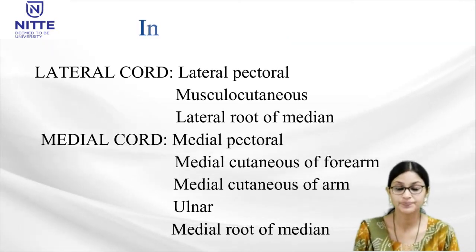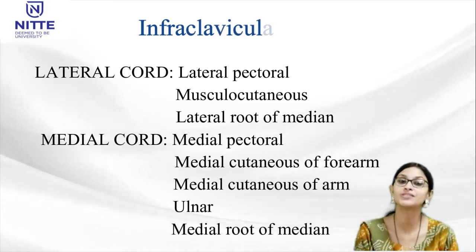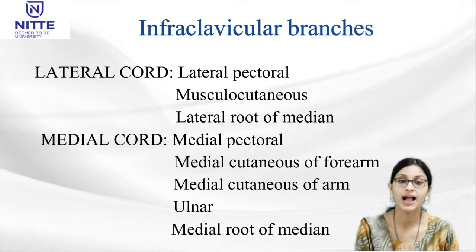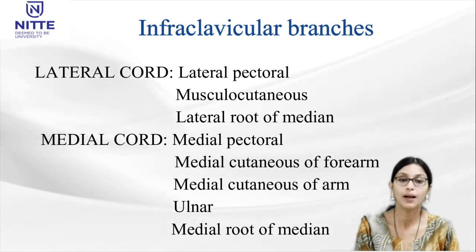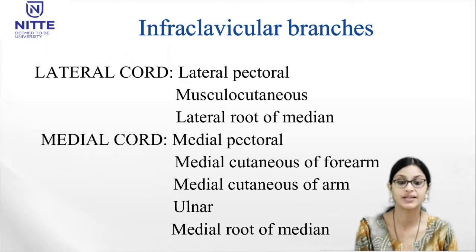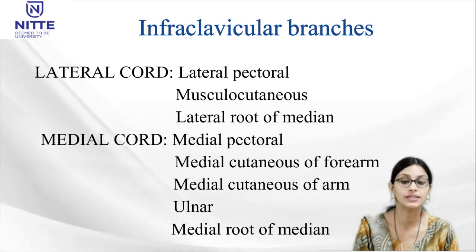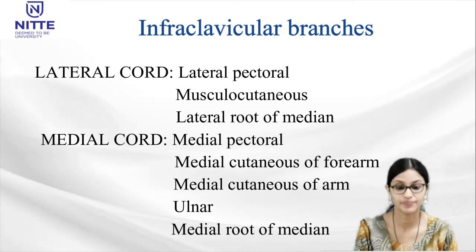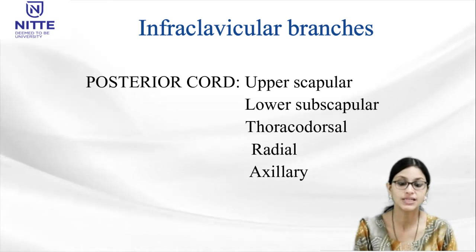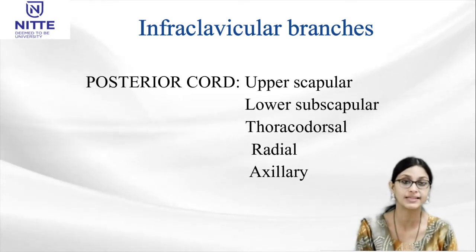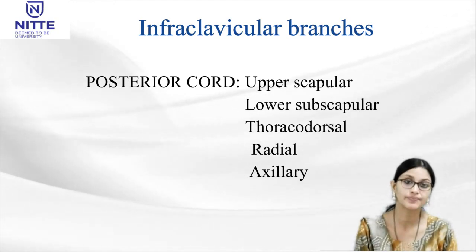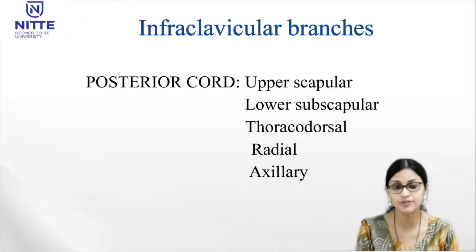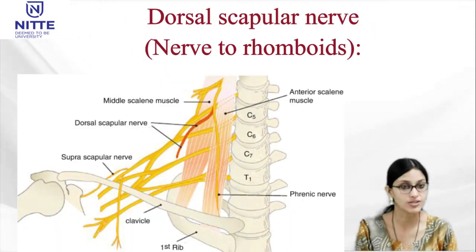The lateral cord gives three branches: lateral pectoral nerve, musculocutaneous nerve, and lateral root of median nerve. The medial cord gives five branches: medial pectoral nerve, medial cutaneous nerve of forearm, medial cutaneous nerve of arm, and medial root of median nerve. The posterior cord gives five branches, remembered by the mnemonic ULTRA: upper subscapular, lower subscapular, thoracodorsal, axillary nerve, and radial nerve.